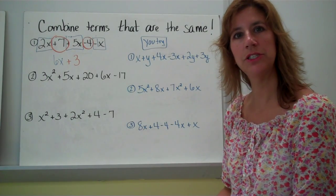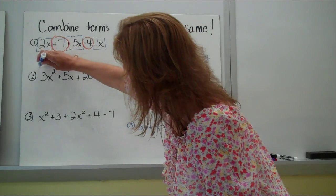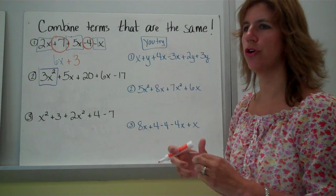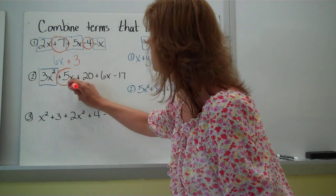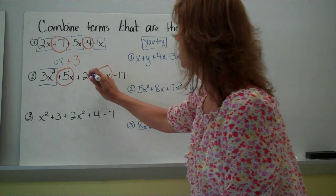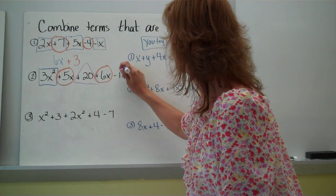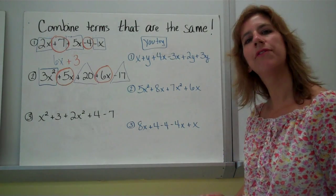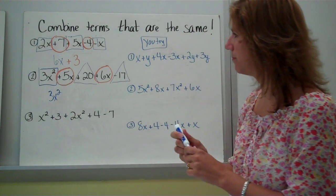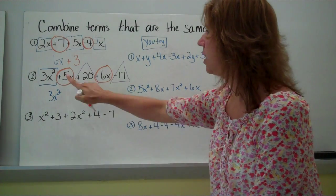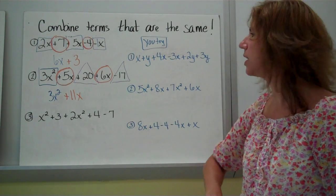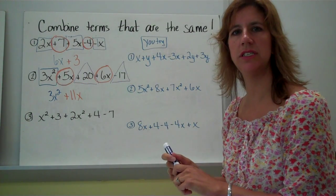Let's try another one — jot this down and let's do it together. I'm going to put my boxes around terms. This is an x squared — do I have any more x squareds? Nope, that's the only one. Now I'm going to look for all my x values: there's a plus 5x and a plus 6x. And then I've got my constants. So putting it together: I only have one x squared, so I just copy it. For the x terms: plus 5 plus 6 gives me 11x. And my constants: plus 20 minus 17 gives me 3. The answer is x squared plus 11x plus 3.